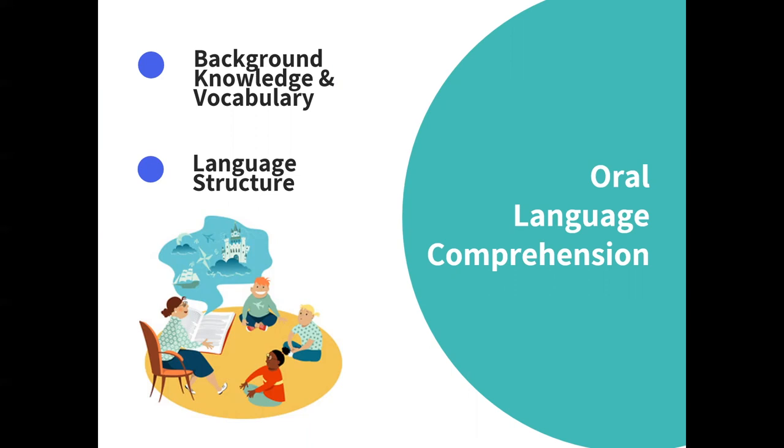The second part of the simple view of reading is oral language comprehension — you'll see it written as language comprehension. I use the term oral language comprehension to drive home the point that we're really talking about oral language, not reading, because reading comprehension is the end goal. If students can't hear and understand our language, they definitely won't be able to read and understand our language. So we need to build oral language comprehension in all of our students. Oral language comprehension includes background knowledge, vocabulary, and language structures.